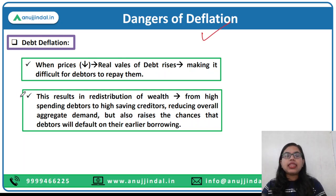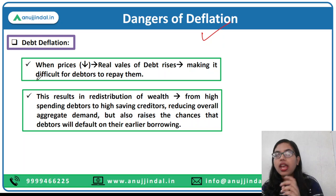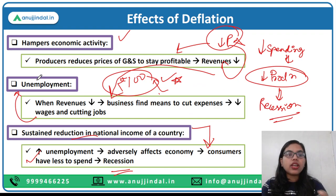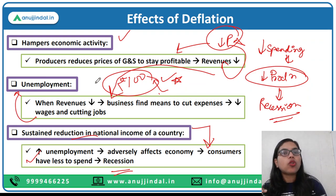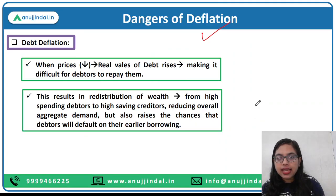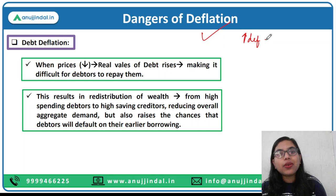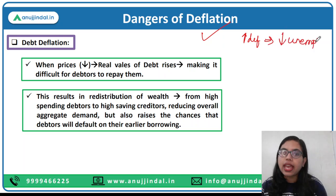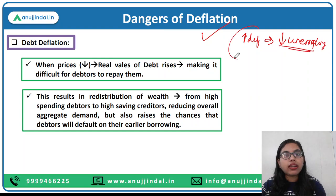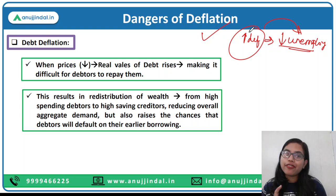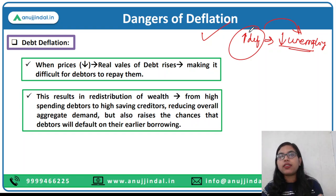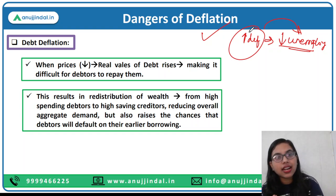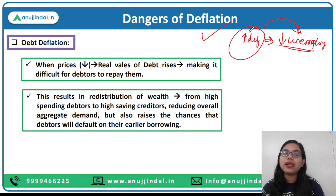Now moving forward and talking about the dangers of deflation. Suppose, as we have talked about, countries like Japan and Switzerland are facing the problem of deflation, and with deflation the problem of unemployment persists. But what if we leave unemployment aside? What if deflation is there in the economy but we do not find any kind of unemployment — can it still be problematic? Even if deflation is not resulting in unemployment, it is very problematic because there are certain other dangers of deflation that make it worrisome.